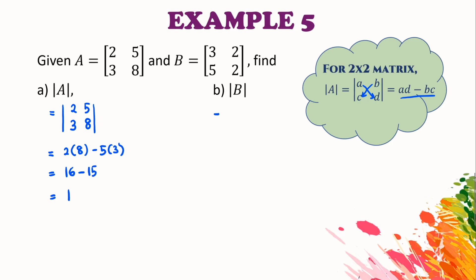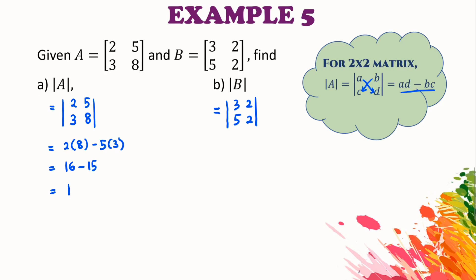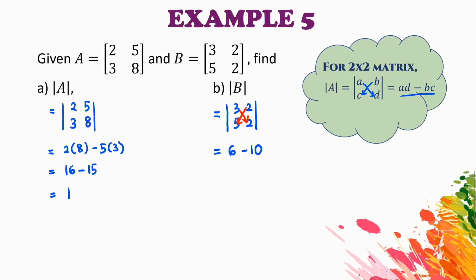For part b, we are going to use the same steps as well. |B| = 3(2) - 2(5) = 6 - 10 = -4.